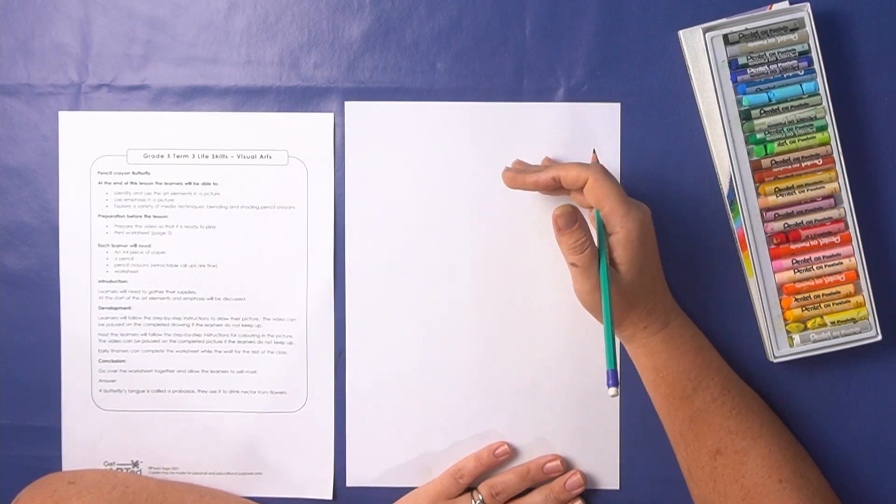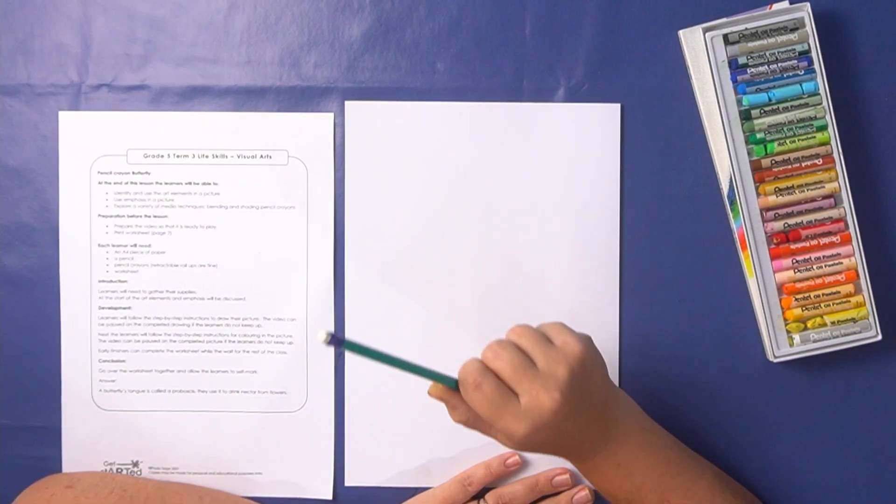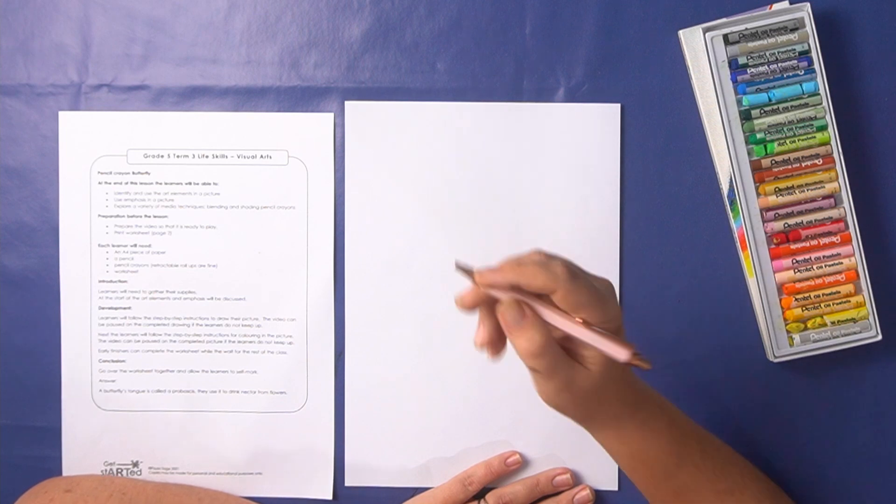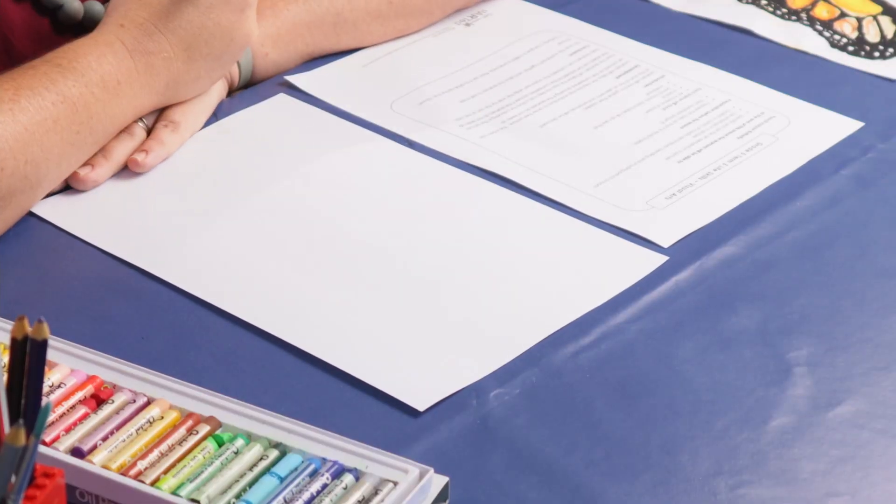The first thing that we're going to do is draw our butterfly in pencil. Now you're going to use a pencil, I'm going to use my black pen so that you can see my picture nice and clearly.